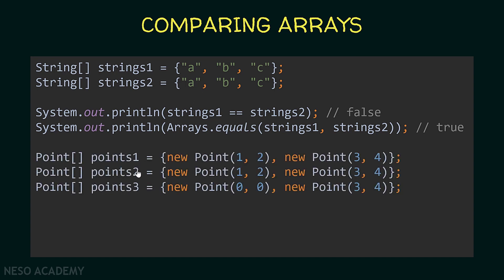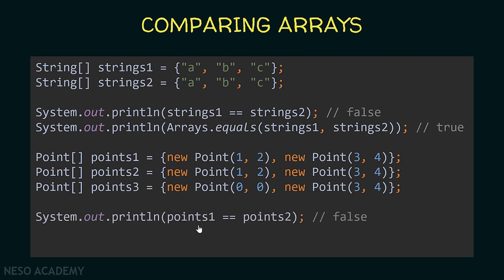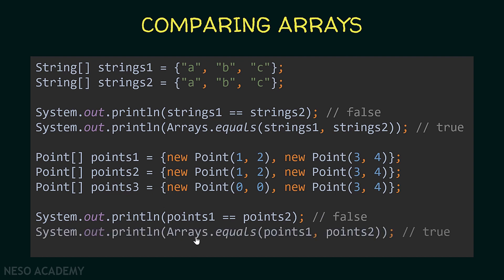Now let's look at another example. I have three arrays of points: points one, points two, and points three. In the first array, we have a point with x equal one and y equal two, and another point with x equal three and y equal four. We have the same values in the second array. Keep in mind that each point is a different object, so the addresses are different, but the abscissa and ordinate values are the same. When we print points one == points two, this displays false because the addresses differ. But using the Arrays.equals method, comparing points one with points two displays true — Java compares the abscissa with the abscissa and the ordinate with the ordinate, not the addresses of the points.